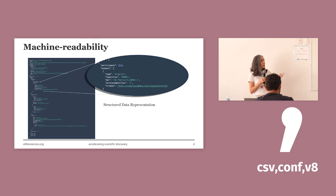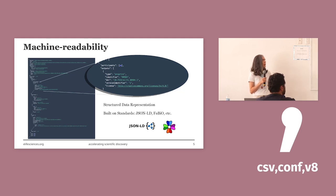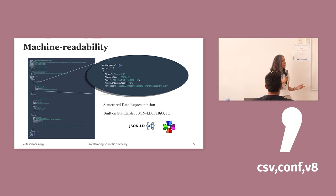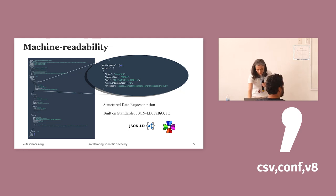DocMap doesn't use something new as a standard format. It is built on well-known standards like JSON-LD, and we have some SPAR ontologies like FABIO. I will give more details about those ontologies later on.